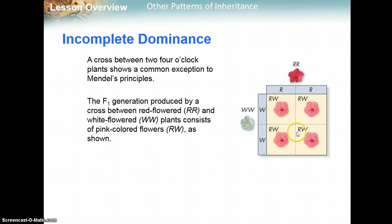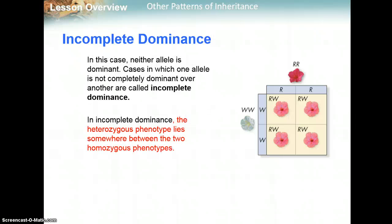Whenever you see a blending of phenotypes in the F1 generation — a blending of the parent phenotypes — that's going to be incomplete dominance, where we don't have red over white. They blend together to make this phenotype. In this case, neither allele is dominant. Cases in which one allele is not completely dominant over the other is called incomplete dominance. In incomplete dominance, the heterozygous phenotype lies somewhere between the two homozygous phenotypes.